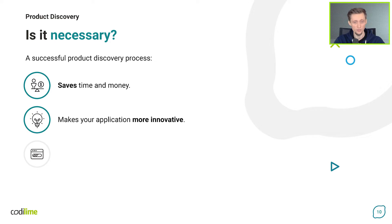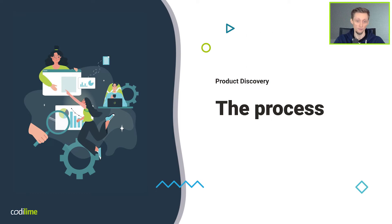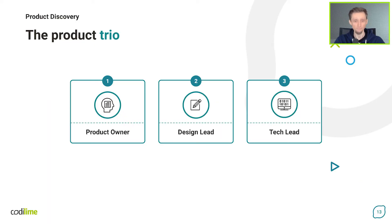Product discovery makes your application more innovative as you incorporate user viewpoints from the very beginning of the development process. It also makes the lives of product designers and developers easier — they avoid spending time building a product nobody needs. Now let's talk about the process itself. First you need to understand the purpose of a new feature or product and the problem it solves. The goal is determined by a specific case and can concern one part of functionality or the whole product.